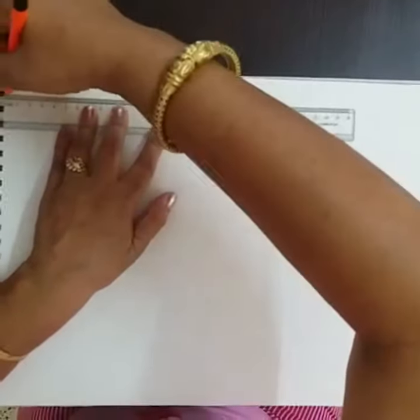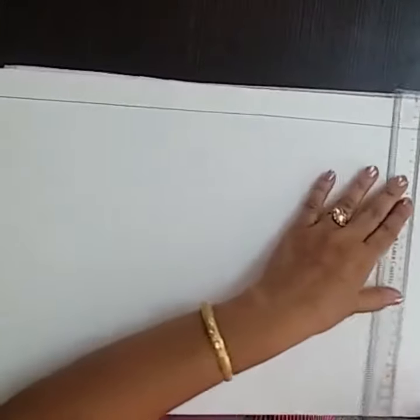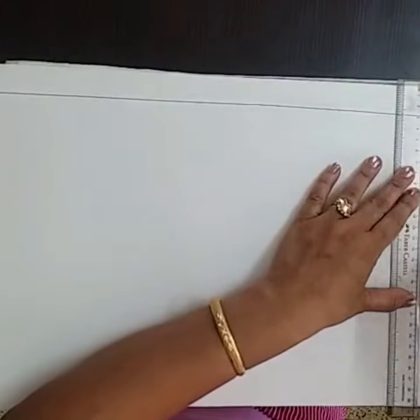First we will make a border on all sides of the paper with the help of a scale. And then at the bottom of the paper we are doing only a half line.